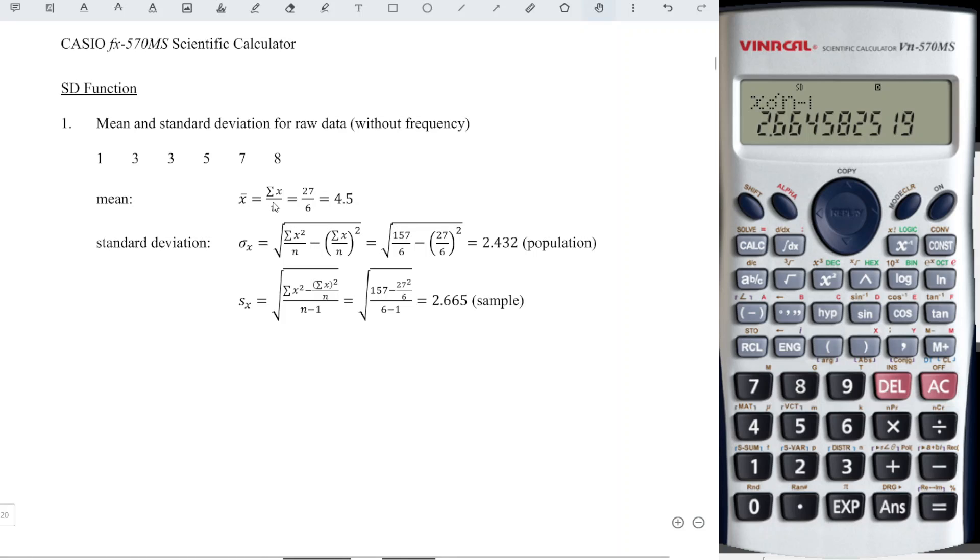However, lastly, we have to show the summation value. Then we have to press Shift 1. Summation X is number 2. Then we choose 2. Remember to press equal. So we have 27. And we Shift 1 again and look for summation X squared, 1 and press equal and we will get 157.